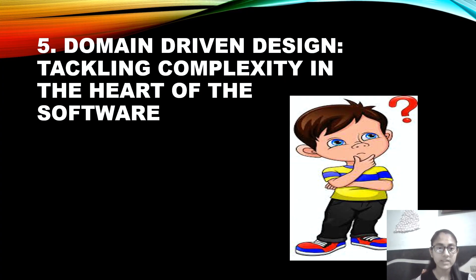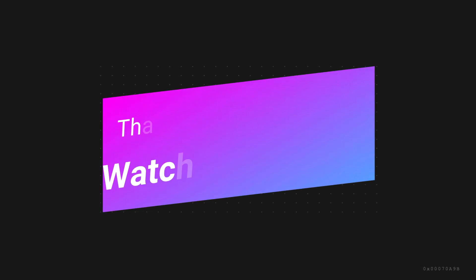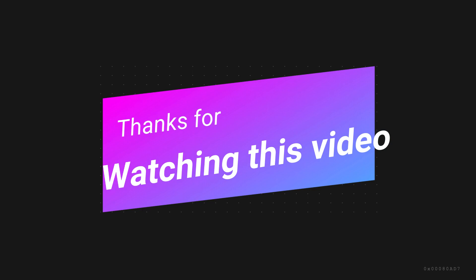The last on the list is 'Domain-Driven Design: Tackling Complexity in the Heart of Software.' This is one of the oldest books featured on this list. While everyone may say this book is not particularly for software architecture, I agree — but this is a must-read book for programmers who want to become a software architect. It deals with goals like placing primary focus on the core domain and domain logic, and focuses on basing complex designs on a model of the domain. Overall, these are the five books for a software architect's technical needs.